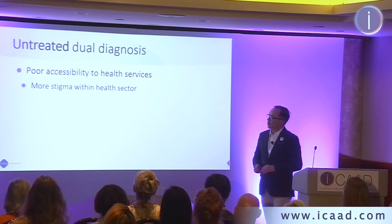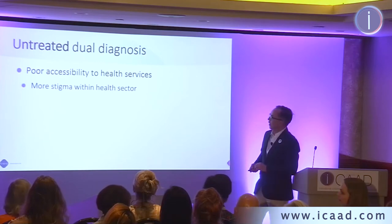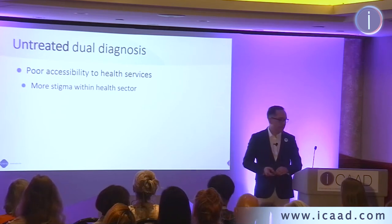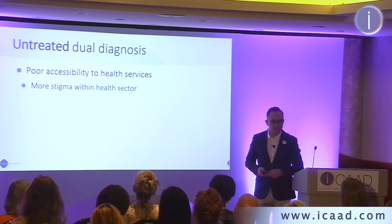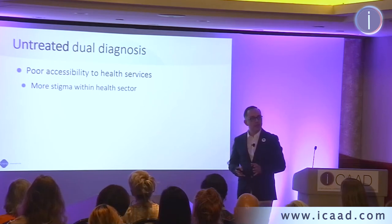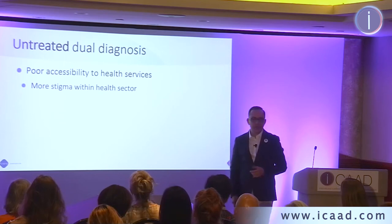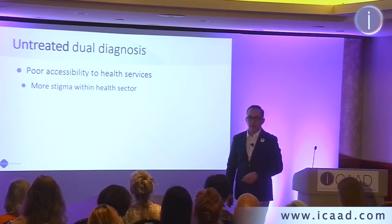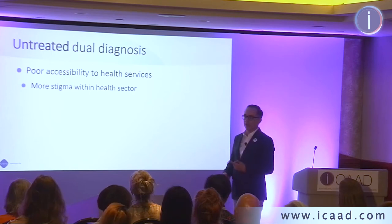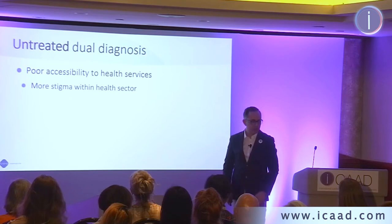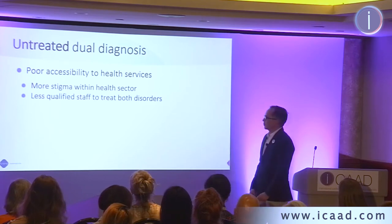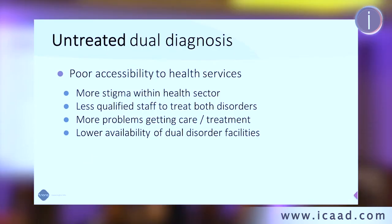People with dual diagnosis have poorer access to healthcare facilities, and the reason is stigma — stigma in the healthcare sector itself. In a psychiatric unit: 'Yeah, but that one is addicted, nothing will happen with the mood as long as they're addicted.' In an addiction unit: 'That patient has ADHD, we can try to treat but you know...' We stigmatize patients ourselves. There are fewer qualified staff treating these disorders, more problems getting care, and a general low availability of dual disorder treatment facilities.